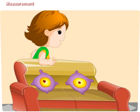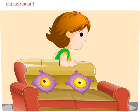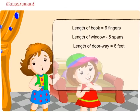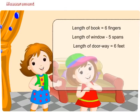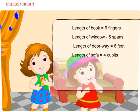We can also measure the length of our sofa by cubits: 1, 2, 3, 4. So, the length of our sofa is four cubits.